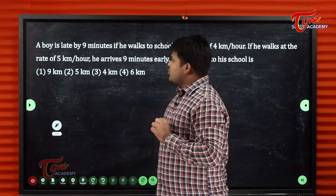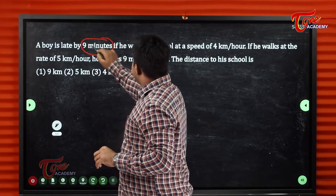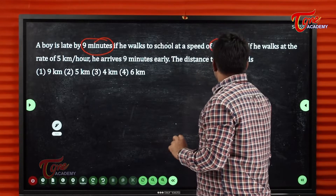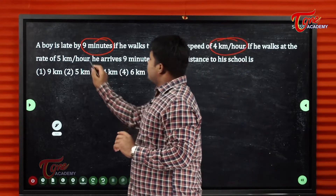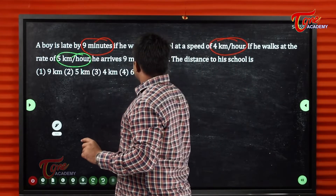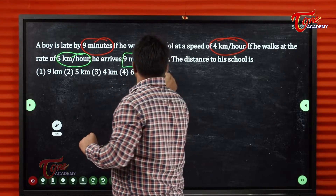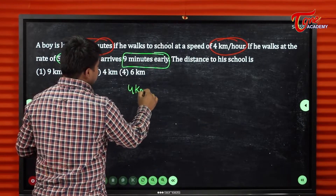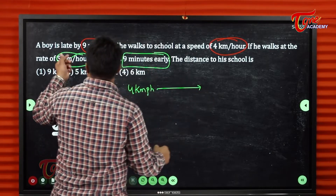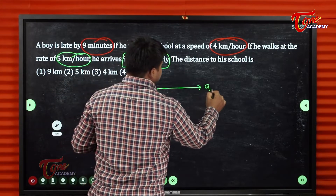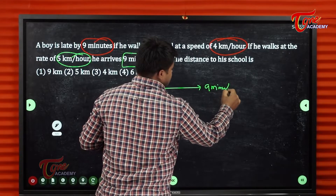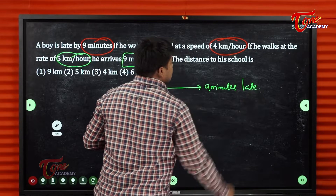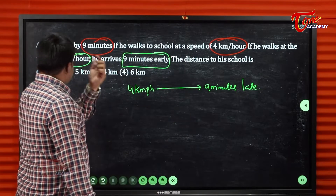Last question: A boy is late by 9 minutes if he walks to school at 4 kilometers per hour. If he walks at 5 kilometers per hour, he reaches the school 9 minutes early. Since it is early-late, we add the times: 9 + 9 = 18 minutes total time difference.